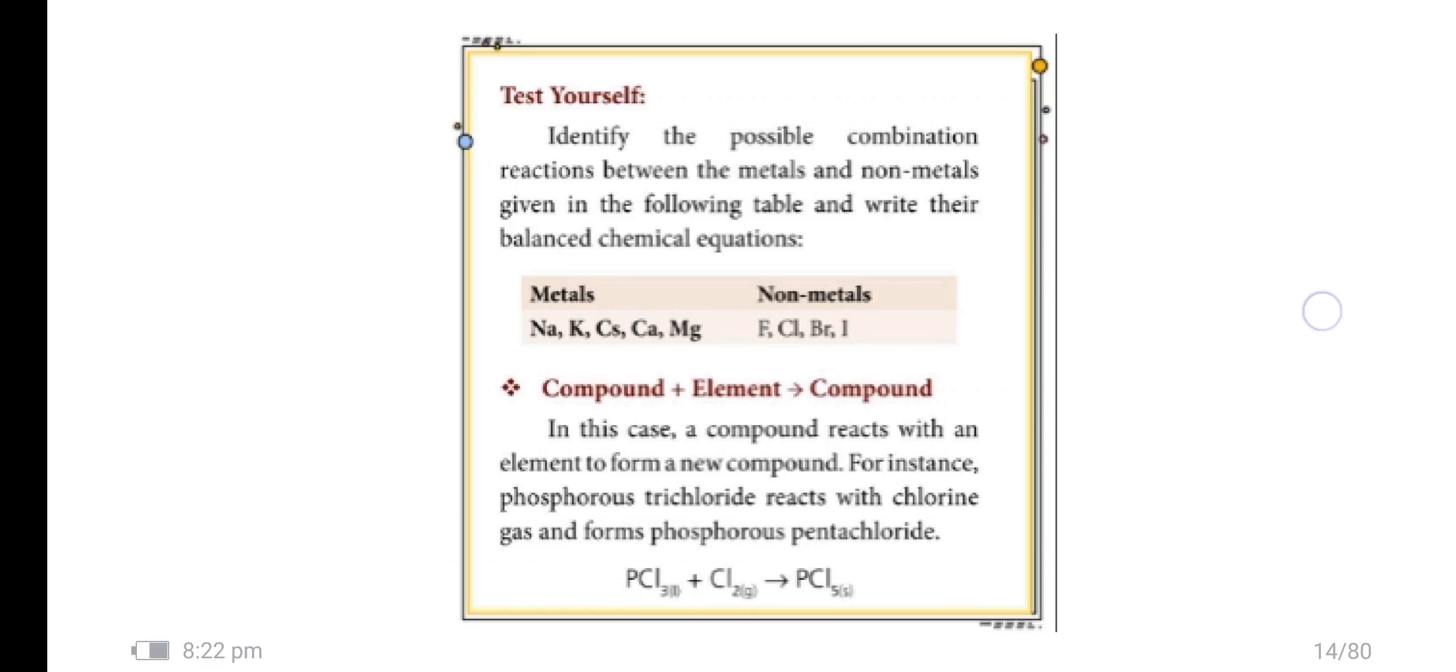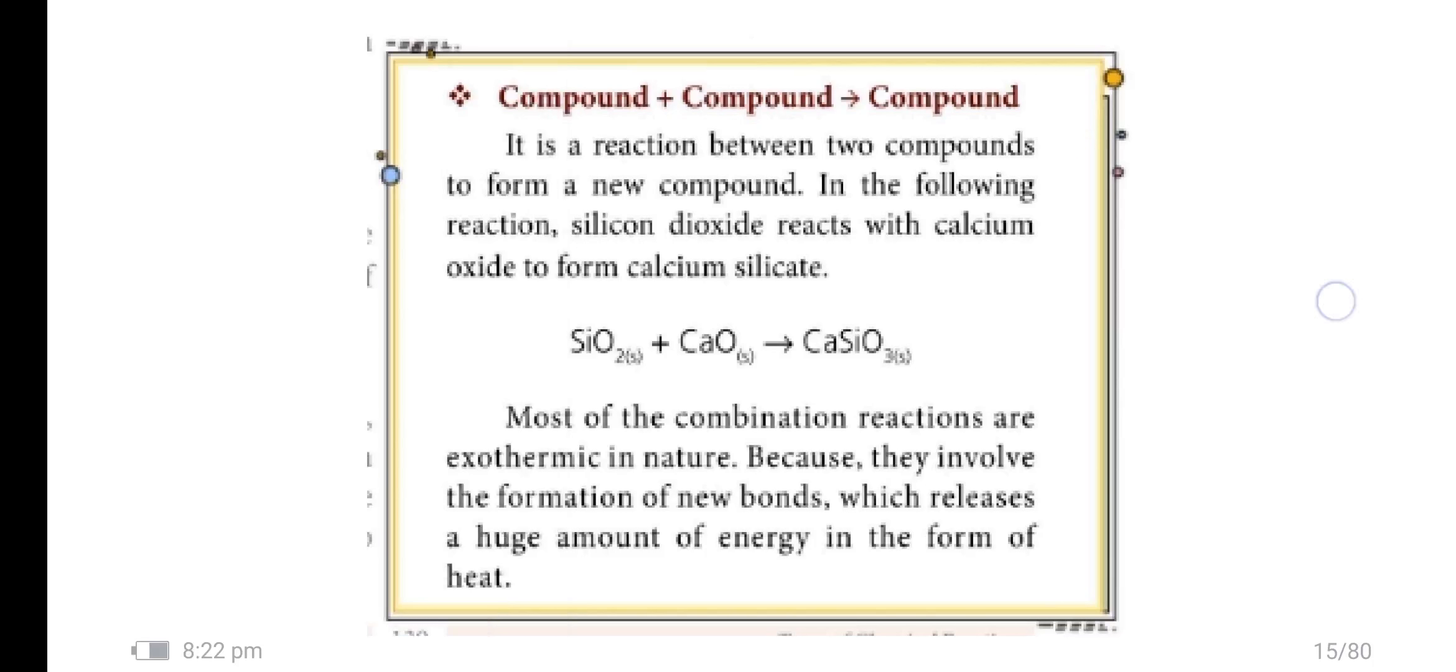In the second type, compound plus element gives compound. In this case, a compound reacts with an element to form a new compound. For instance, phosphorus trichloride reacts with chlorine gas and forms phosphorus pentachloride: PCl3 plus Cl2 gives PCl5. In the third type, compound plus compound gives compound. In this reaction, two compounds react to form a new compound. In the following reaction, silicon dioxide reacts with calcium oxide to form calcium silicate: SiO2 plus CaO gives CaSiO3. Most of the combination reactions are exothermic in nature because they involve the formation of new bonds which release huge amounts of energy in the form of heat.